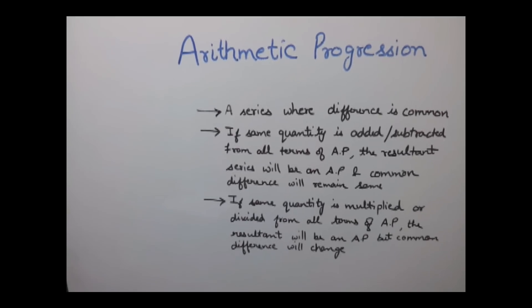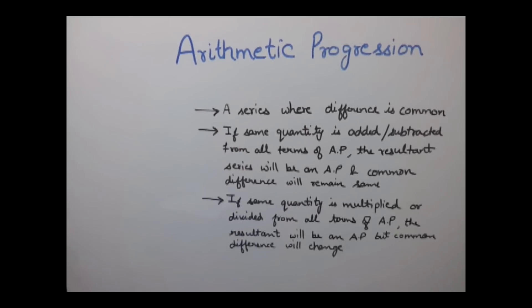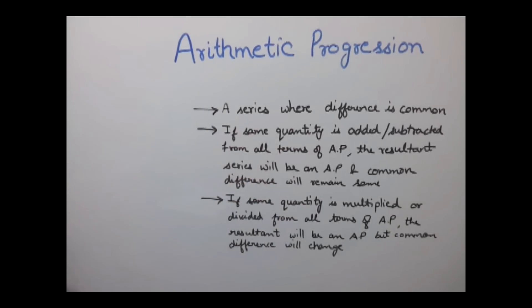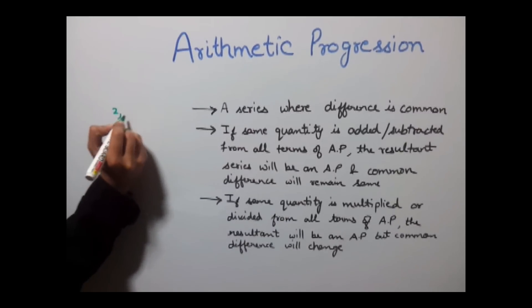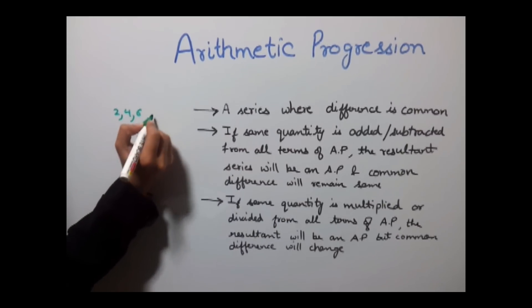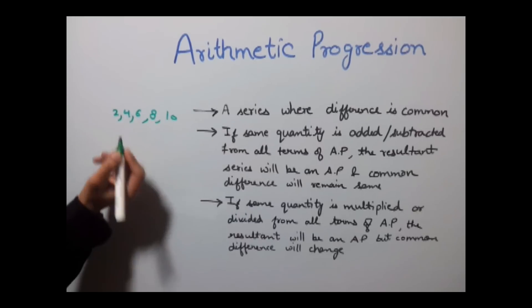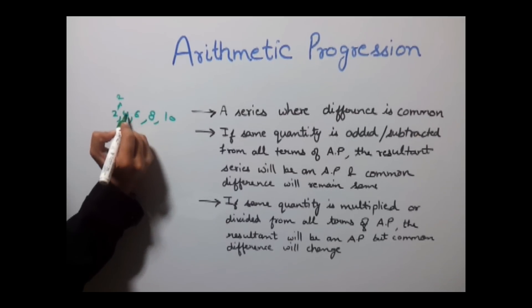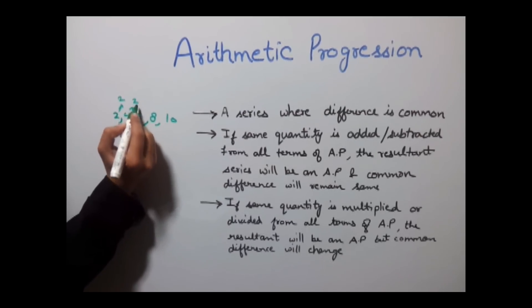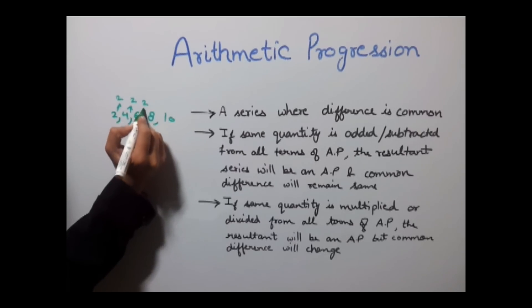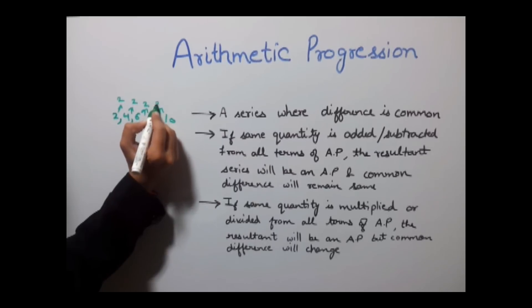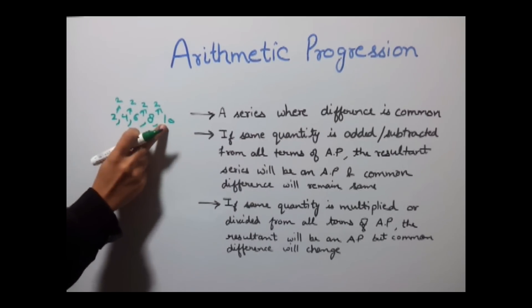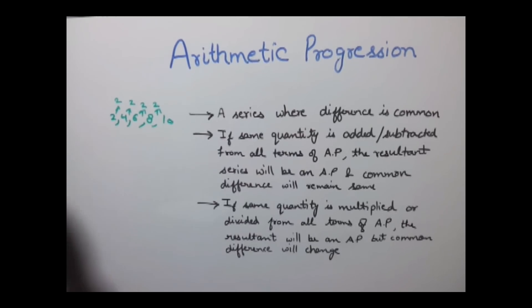An arithmetic progression is a series or sequence where the difference between two consecutive numbers is common. For example, in the series 2, 4, 6, 8, 10 — the difference between any two consecutive numbers is 2. Between 2 and 4 is 2, between 4 and 6 is 2, 6 and 8 is 2, and 8 and 10 is 2. So since the difference is the same between all numbers, this is known as arithmetic progression.